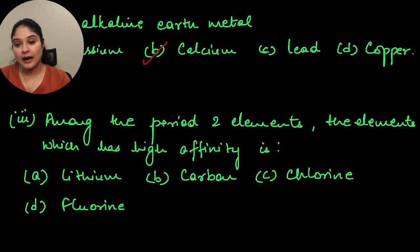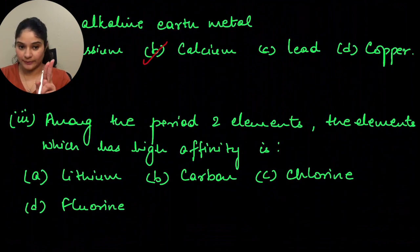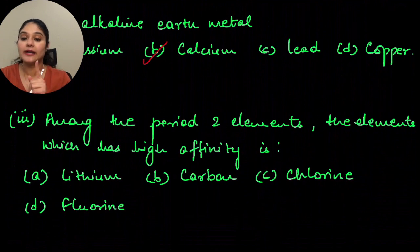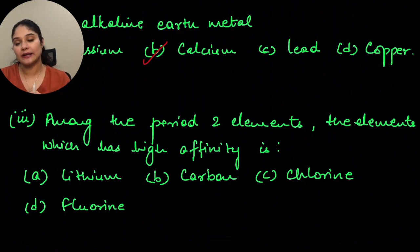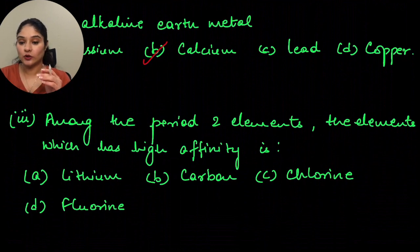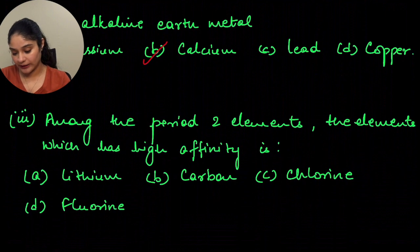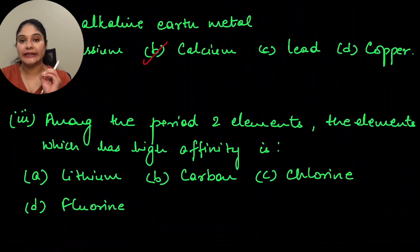The next question is: among the period 2 elements, which element has the highest electron affinity? High affinity means the one in which you add an electron and a high amount of energy is released. For this particular question, if you look at the options, your answer will be B — fluorine.